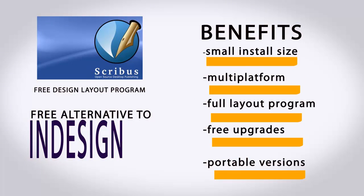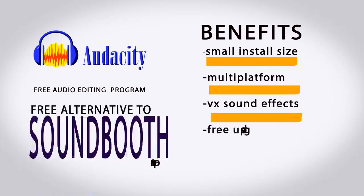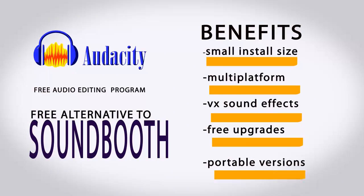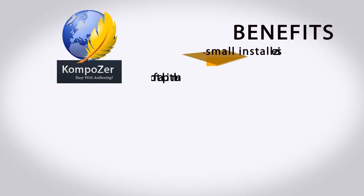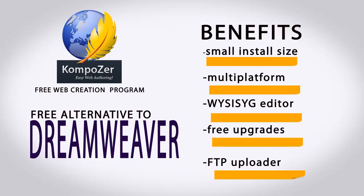Scribus lets designers create professional layouts like a magazine, flyer, brochure, or newsletter project. Audacity is audacious in its ability to edit sound and use it quickly and efficiently. Kompozer allows professional website creation without the hassle of learning to write code.